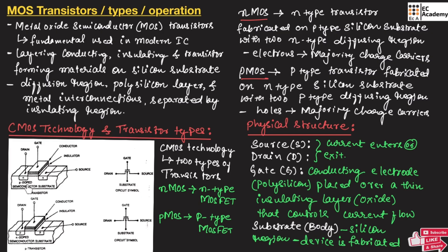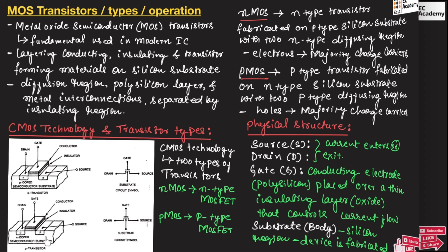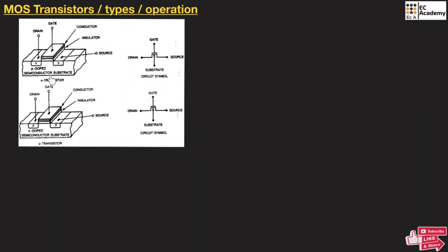Both P-type and N-type transistors consist of a substrate, also known as the body, which is the silicon semiconducting region on which the device is fabricated. For N-type transistors the substrate is P-type, and for P-type transistors the substrate is N-type. The NMOS structure consists of a P-type substrate separating two N-type diffusion regions, and the PMOS transistor has an N-type substrate separating P-type diffusion regions. In both cases, the gate is above the channel region separated by an insulating oxide layer.